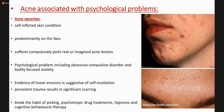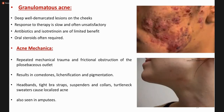Acne excoriée is associated with psychological problems — lesions are self-inflicted, mostly on the face and in females who compulsively pick real or imagined skin lesions. They can also have obsessive-compulsive disorder and body-focused anxiety. Granulomatous acne is a very severe, atypical form of acne with deep well-demarcated lesions, hemorrhagic nodules, pustules, sinuses, and cysts. Antibiotics and isotretinoin are of limited value; retinoids combined with antibiotics are sometimes tried.